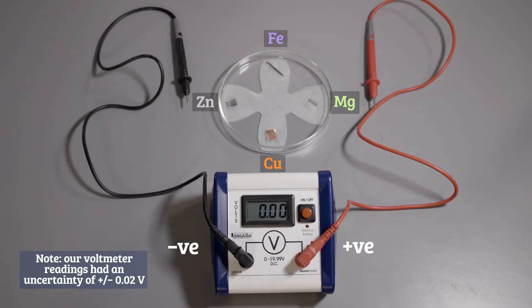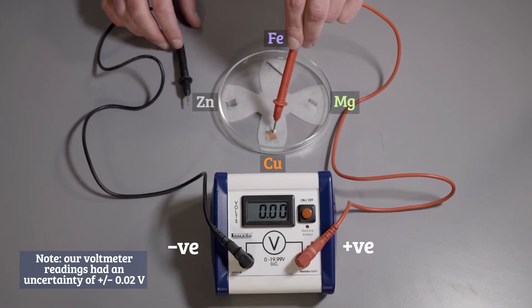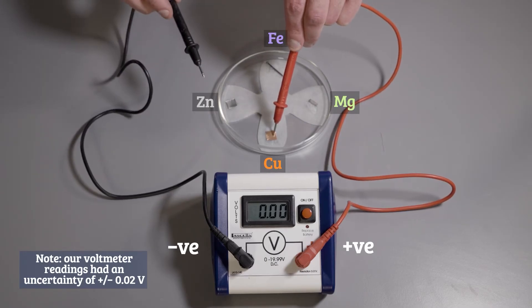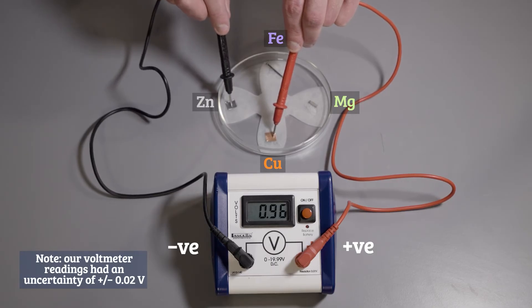I'll start with our familiar zinc and copper. I touch the lead connected to the positive terminal of the voltmeter to the piece of copper and the lead connected to the negative terminal of the voltmeter to the zinc. Make a note of the potential difference.